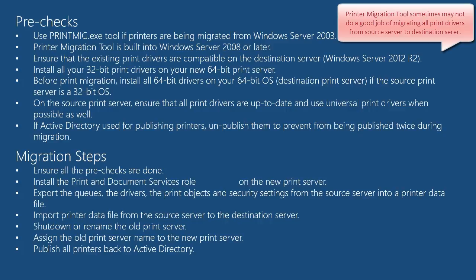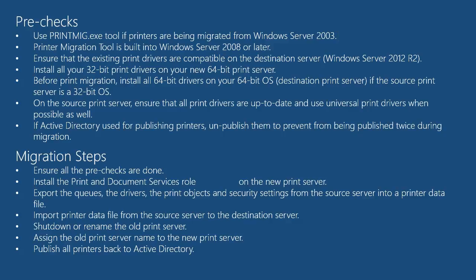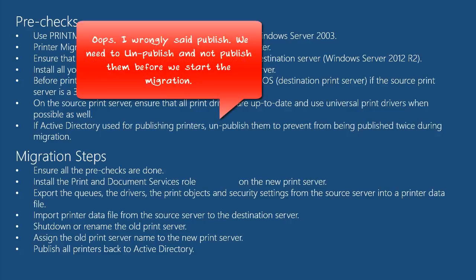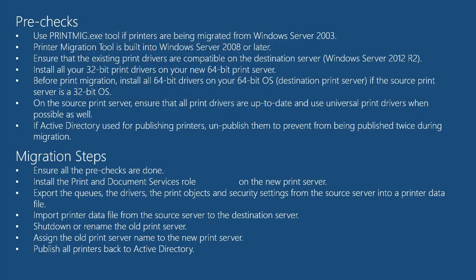For example, if you have 200 printers on your 2003 print server, you would need to add the 64-bit driver for all 200 printers to your new 2012 server before you can complete the migration successfully. On the source print server, ensure all print drivers are up to date and use universal print drivers if possible. If Active Directory is used to publish your printers, unpublish them before migrating to avoid the printers being published twice in Active Directory during migration.